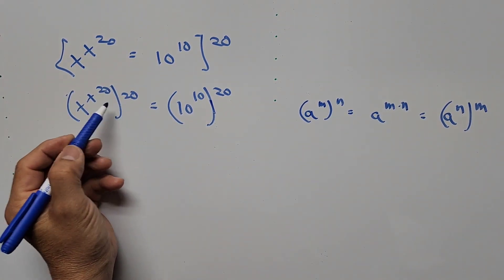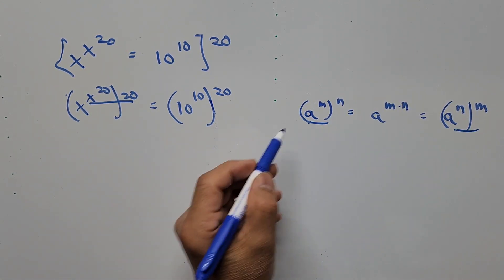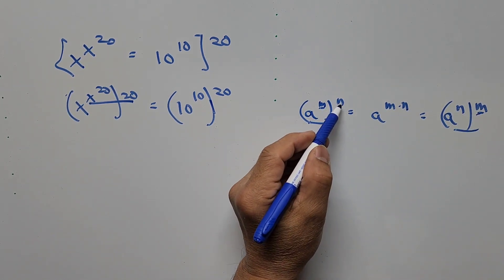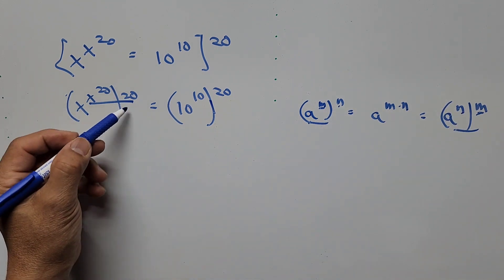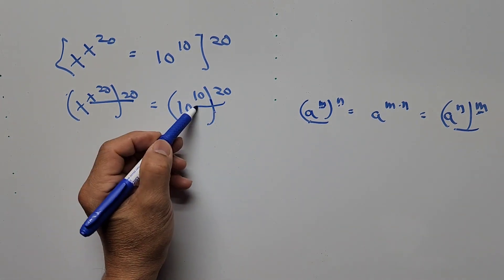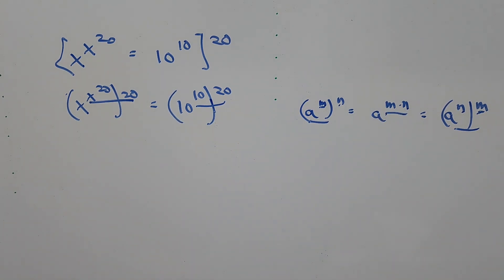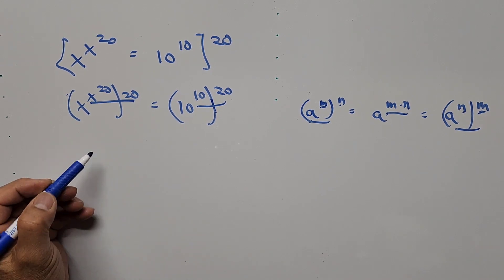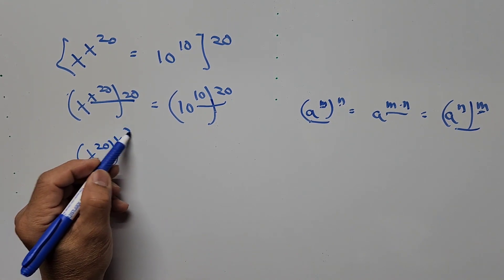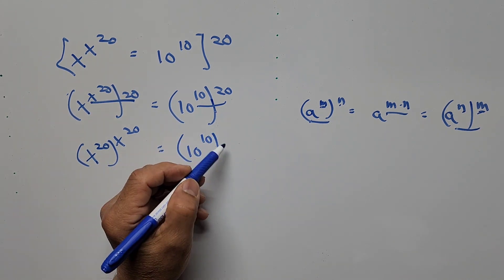On the left-hand side, we're using this exponent rule — the m from the inside goes outside, and the n from the outside goes inside. So this 20 will go inside. On the right-hand side, we multiply the exponents 10 and 20. The equation now becomes: x to the power of 20, raised to the power of x to the power of 20, equals 10 to the power of 10 raised to 20.